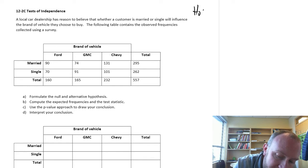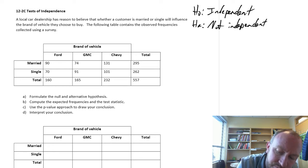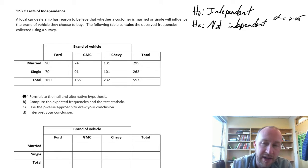So our null hypothesis is that they are independent. Our alternative hypothesis is that they are not independent. As simple as that. We can do this at 0.05 level of significance. So there's part A done.